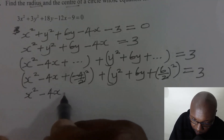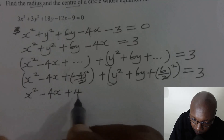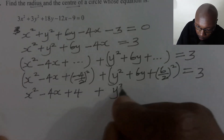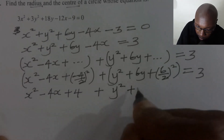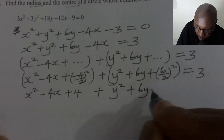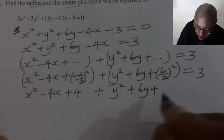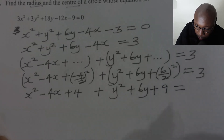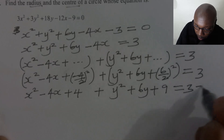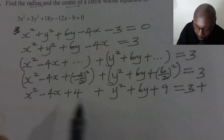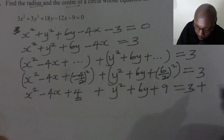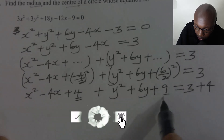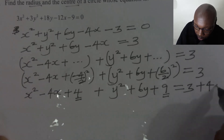So this will give plus 4 for the x terms. Then plus y squared plus 6y plus 9, equals 3. Then we add whatever we added on the left to the right: we added 4 there, so we add 4 here. Then we added 9, so we add 9.